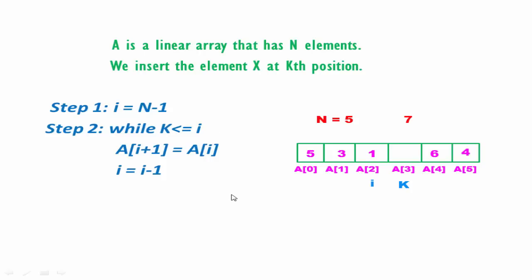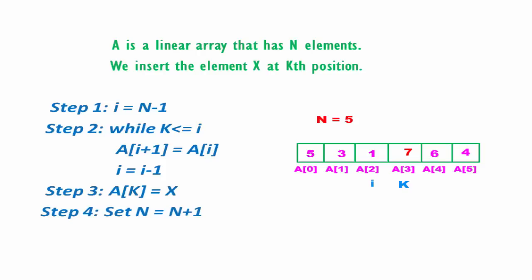Next we insert the element to the kth position — that is A[k] = X. For this example we put 7 there. After inserting an element, the length of the array will be incremented by 1, so we write n = n + 1. And then exit.